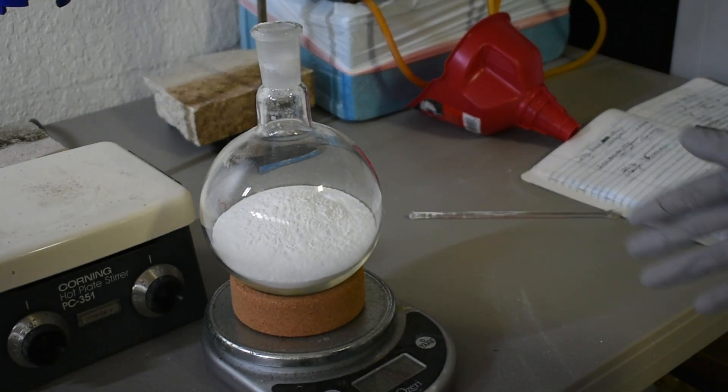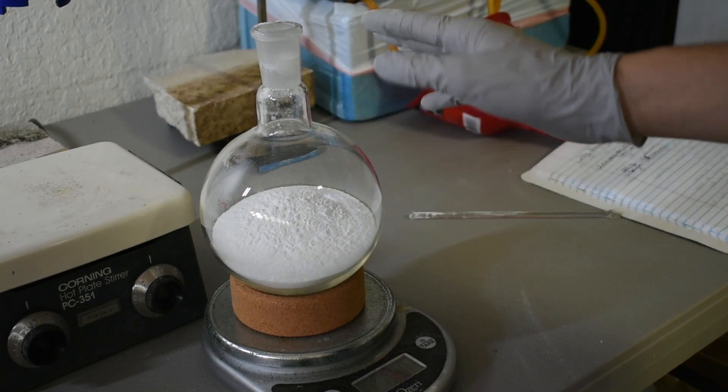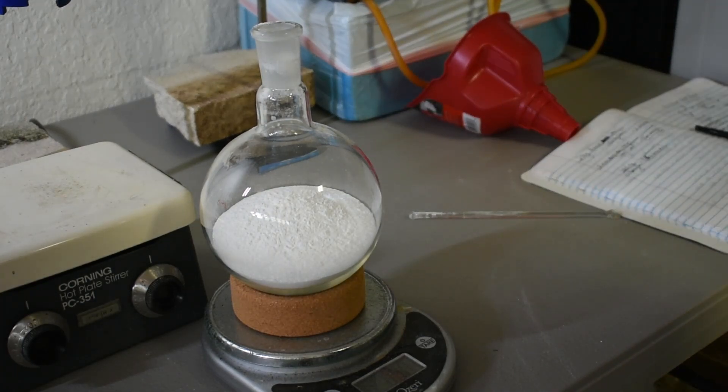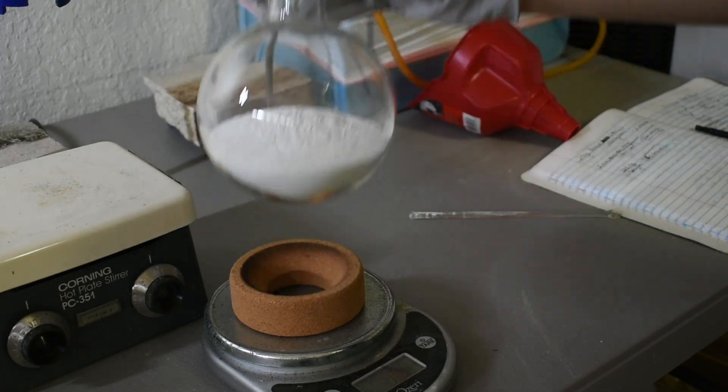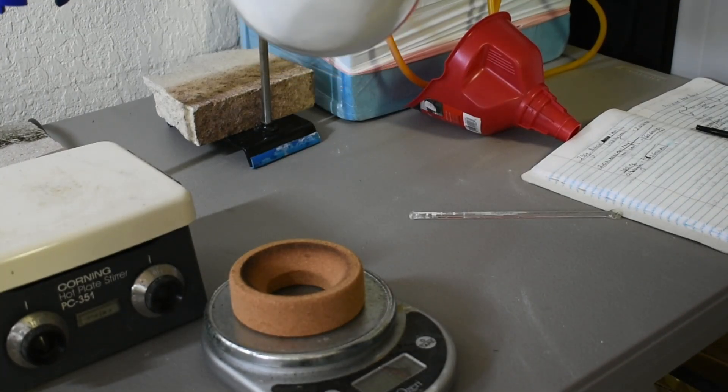Alright, I've weighed my flask and cork before and after. It turns out I actually have exactly 250 grams, so I don't have to do any extra calculations. As you can see, it's a very fluffy white powder.